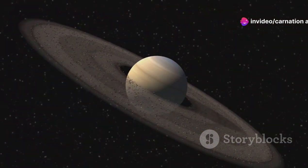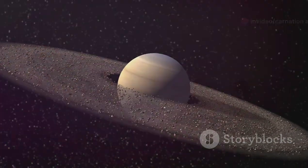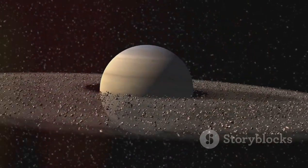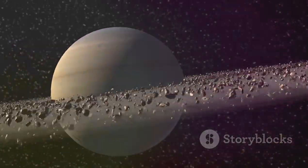Further out, where it was cooler, gas giants like Jupiter and Saturn, as well as ice giants like Uranus and Neptune, formed by accumulating vast amounts of gas and ice.